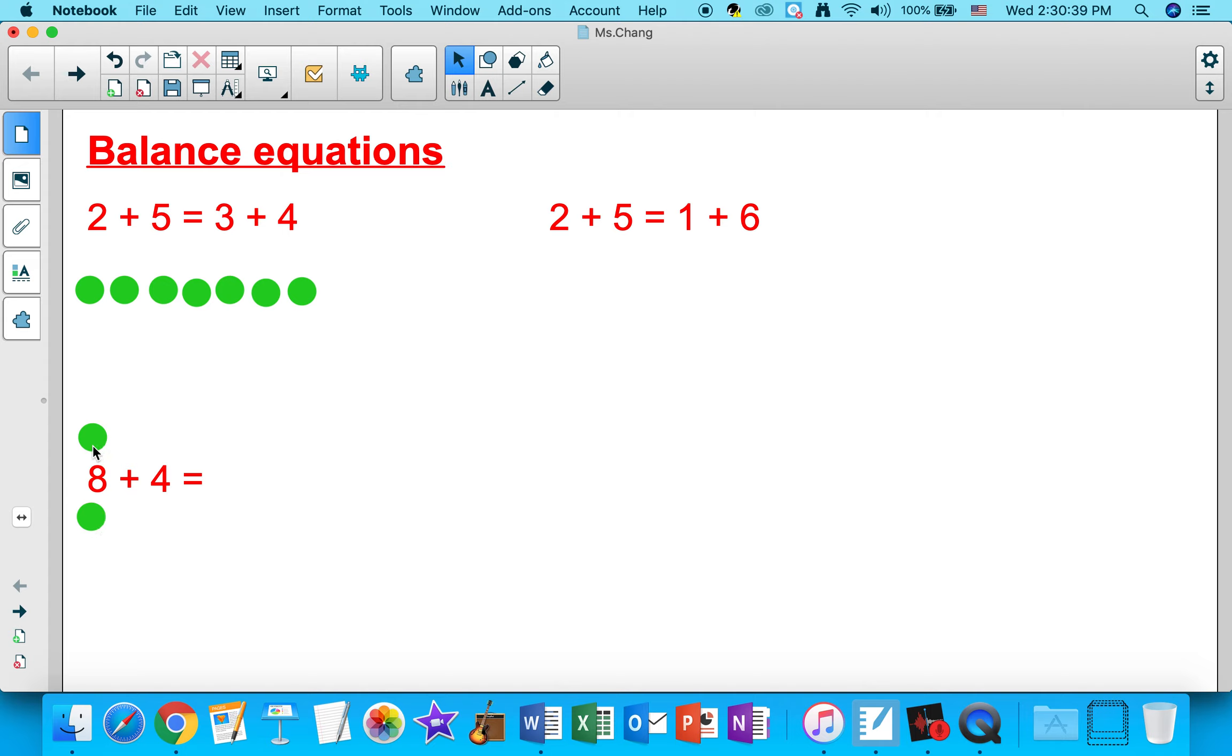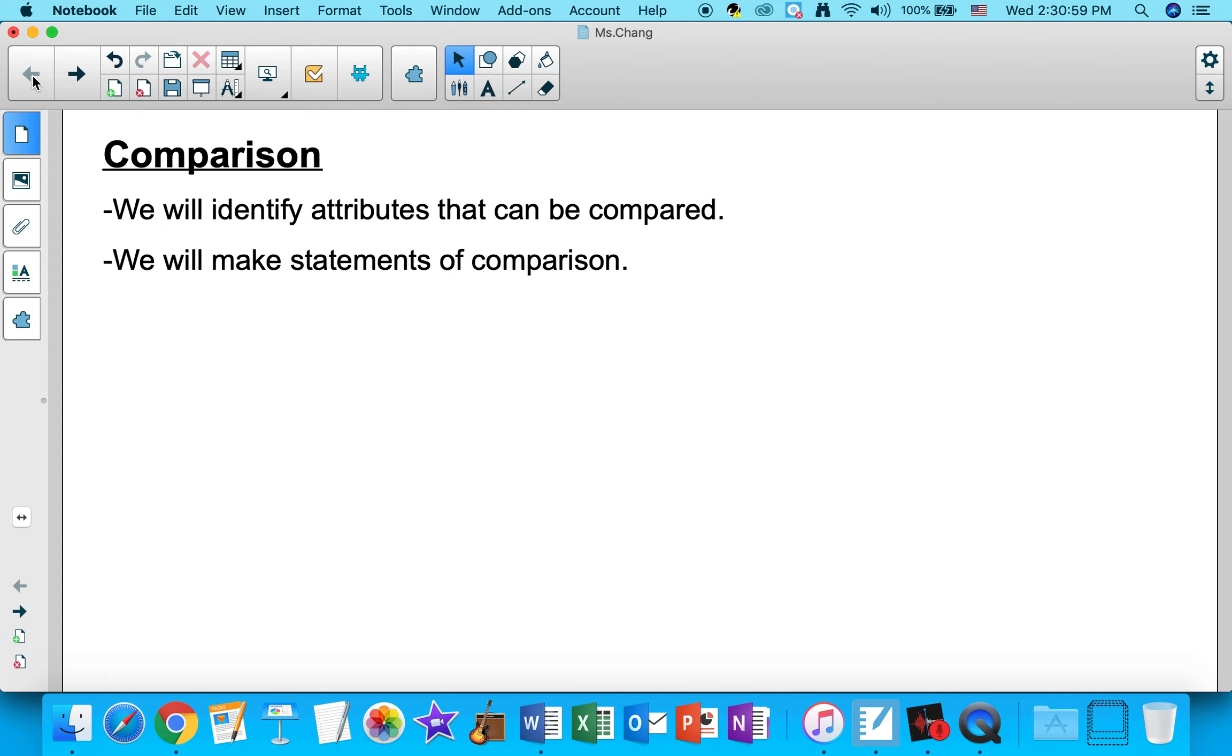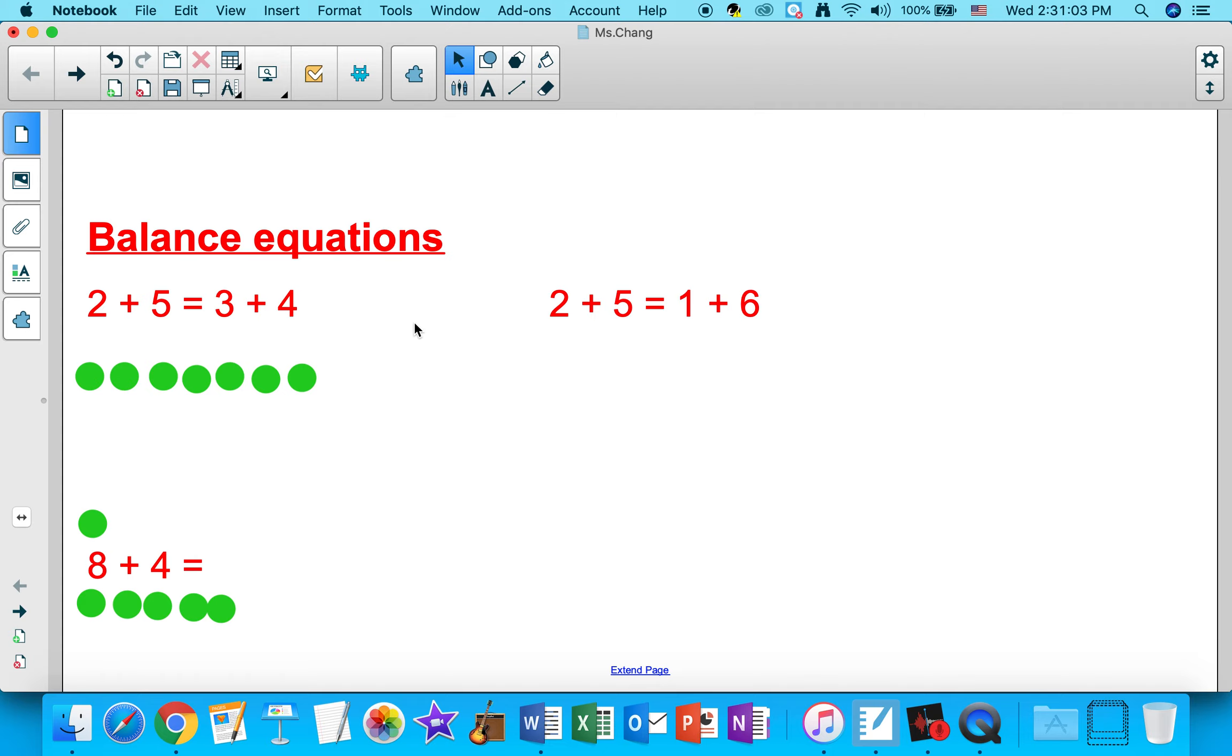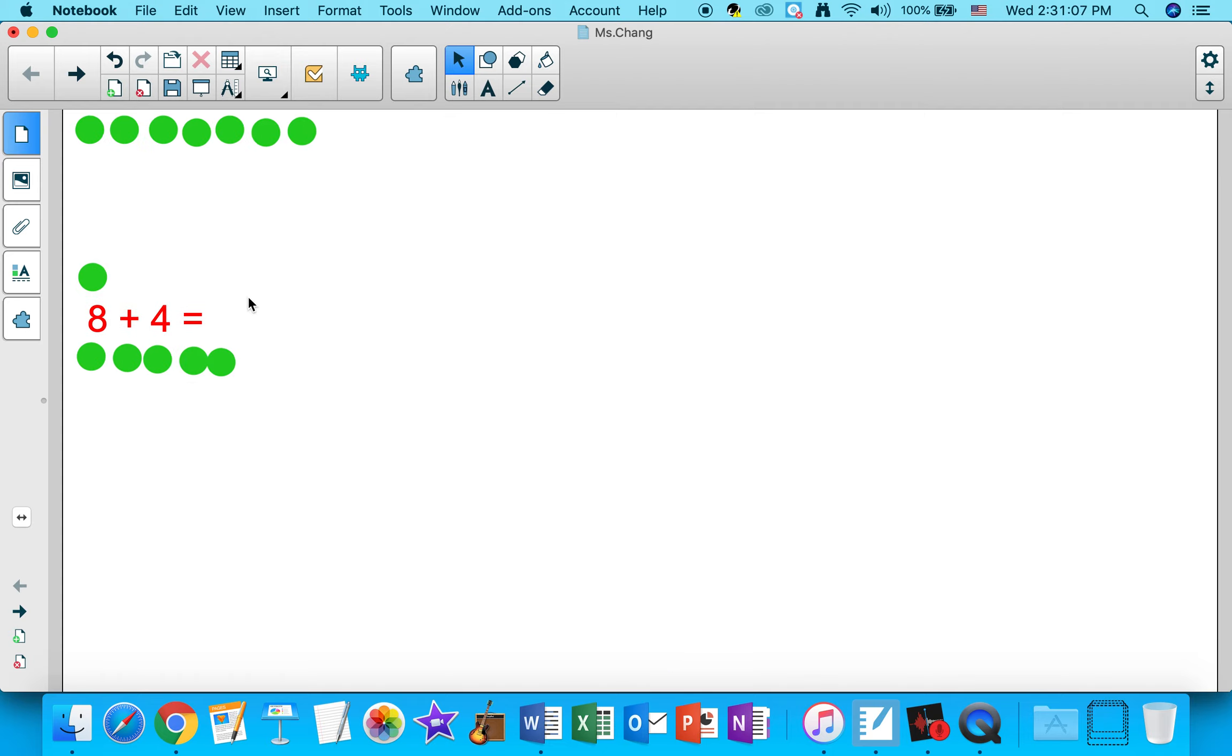So, we will have 8: 1, 2, 3, 4, 5, 6, 7, 8. And then we're adding 4, so 1, 2, 3, 4. So all together I have 12 counters, so 8 plus 4 equals 12.